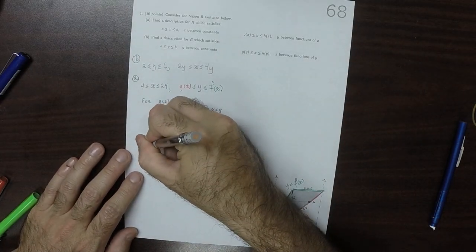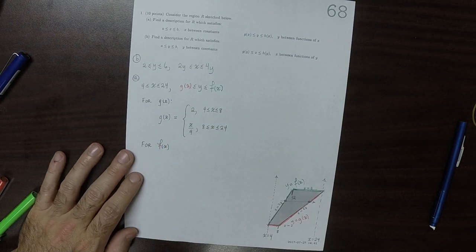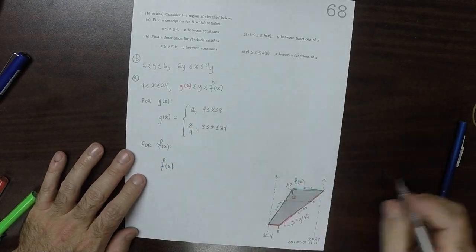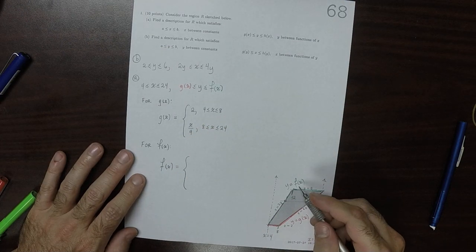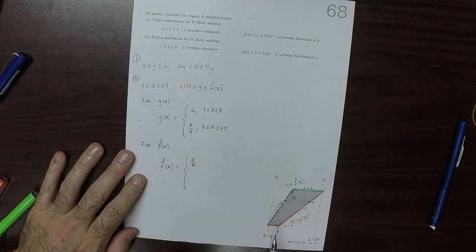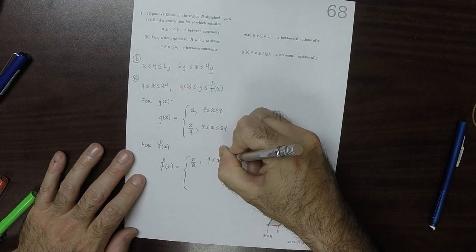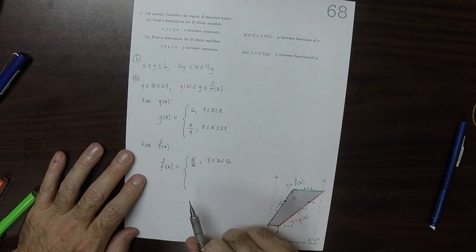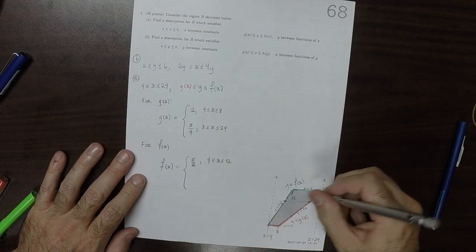For F of X, it again, it also consists of two lines. So this first line is Y is X over 2, and that's between the X values 4 and 12. And between 12 and 24, it's just 6.